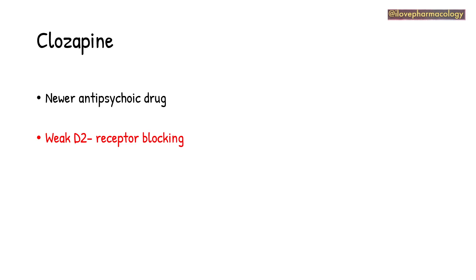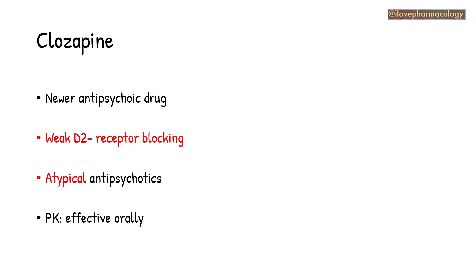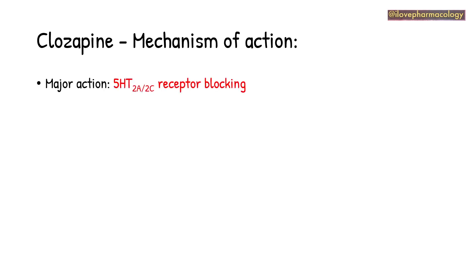Clozapine is a newer antipsychotic agent which has got weak D2 receptor blocking activity when compared to first generation antipsychotics, which are also called typical antipsychotics. Clozapine is also called an atypical antipsychotic. Atypical antipsychotics have weak D2 receptor blocking activity compared to typical antipsychotics. Pharmacokinetically, this drug can be given orally and it is very effective.